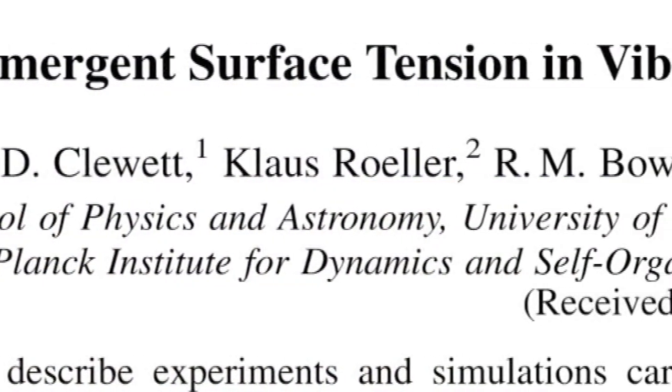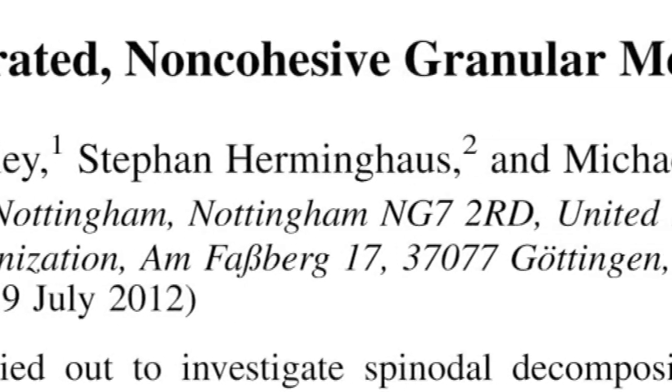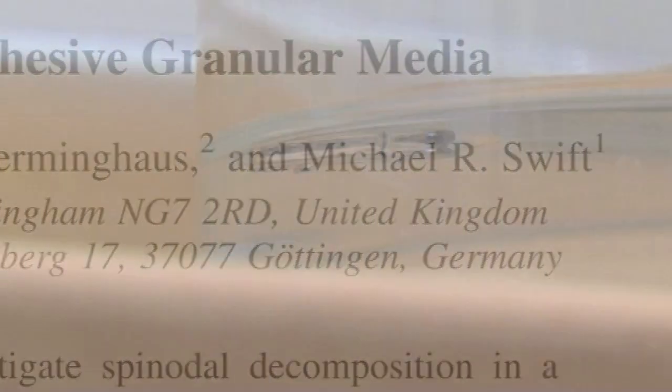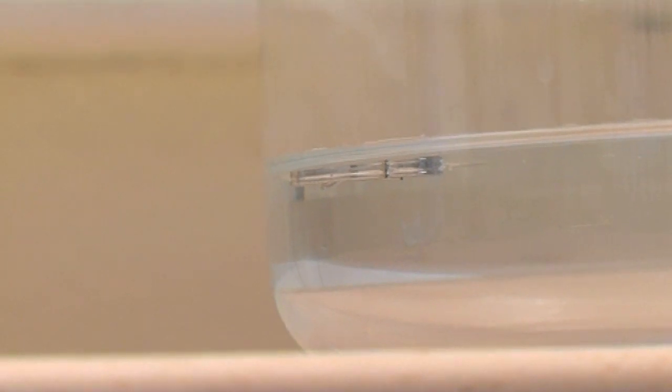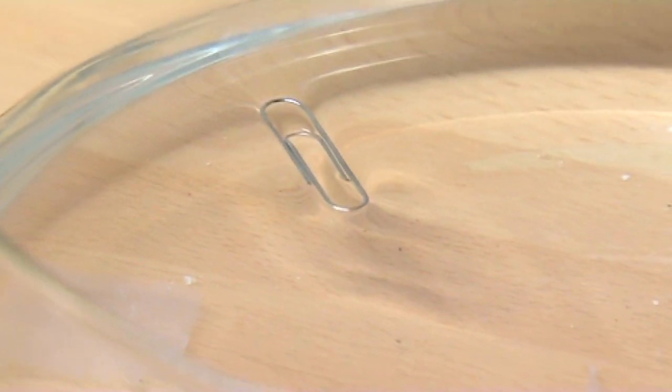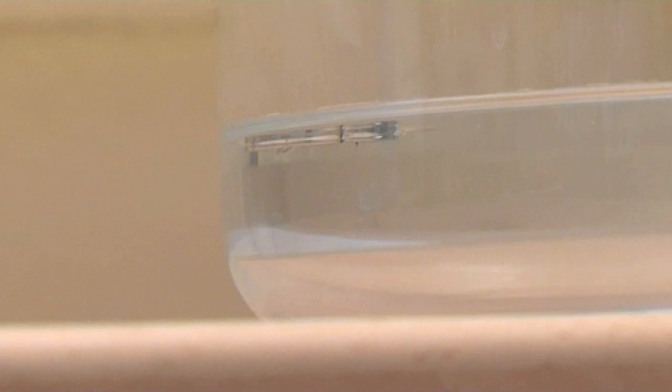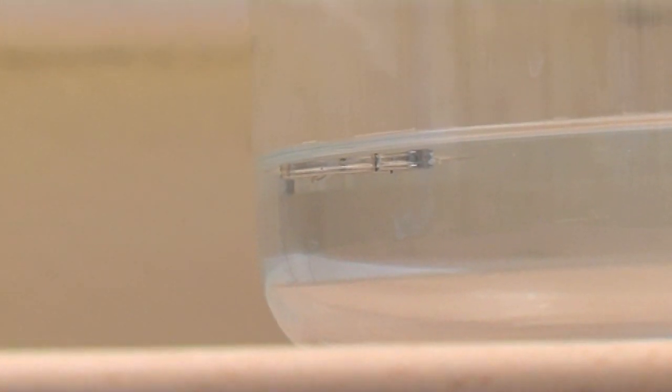Emergent surface tension in vibrated, non-cohesive granular matter. Well, it's impressive because you know that a steel paperclip should be denser than water and so it should sink. But it doesn't sink. And the reason it doesn't sink is because it's sitting on the surface tension of the water.